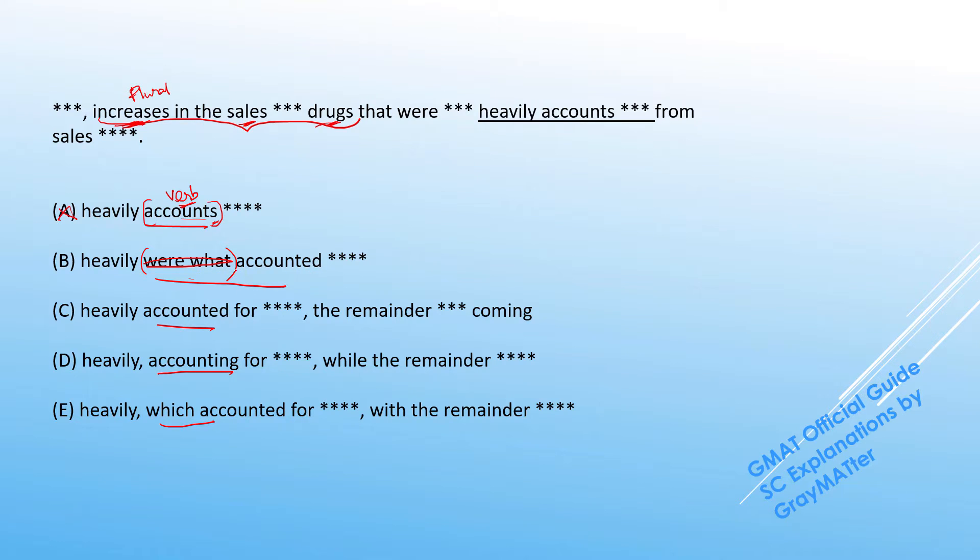So if there is no impact in meaning by removing these two words, this becomes a clear case of redundancy—extra, hence unnecessary words. So B goes off. So C works in this way: heavily accounted for.